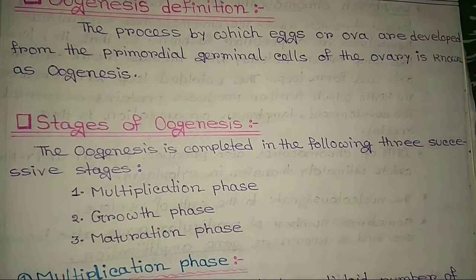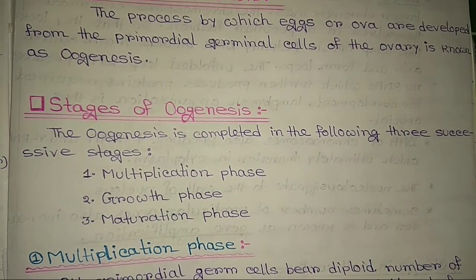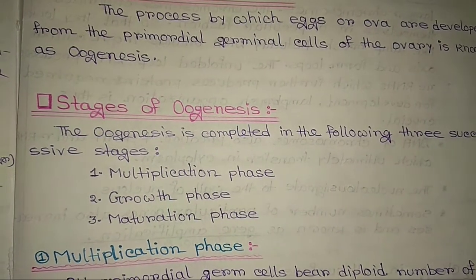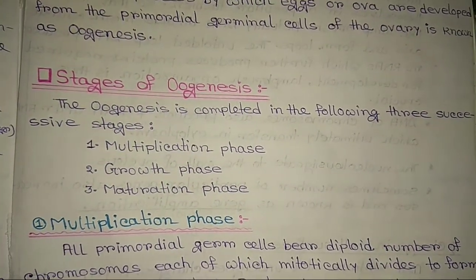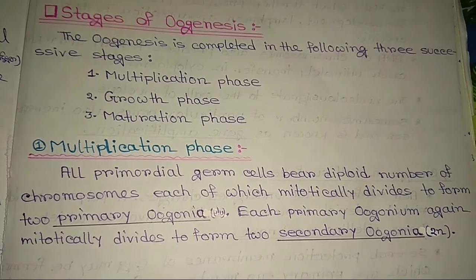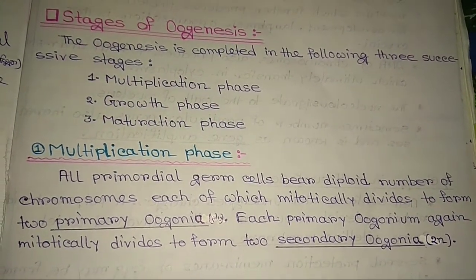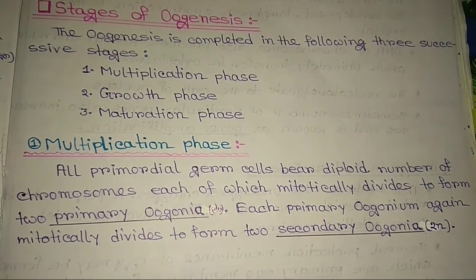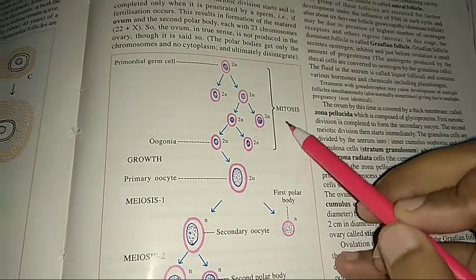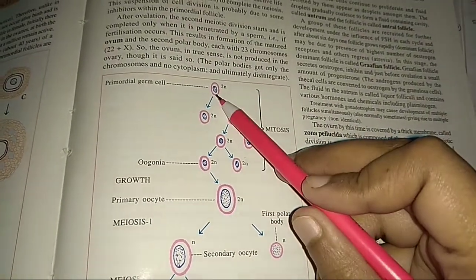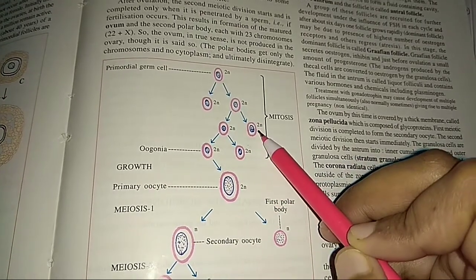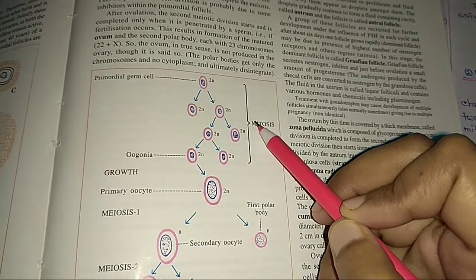The oogenesis is completed in the following three successive stages: first, multiplication stage; second, growth phase; and third, maturation phase. In the multiplication phase, all primordial germ cells bear a diploid number of chromosomes, each of which mitotically divides to form two primary oogonia. Each primary oogonium again mitotically divides to form two secondary oogonia with 2n number of chromosomes. Mitotic division means the chromosome number stays the same.